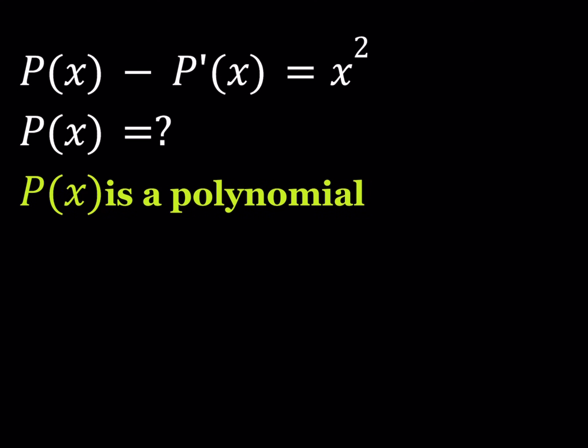So what does this mean? First of all, let's talk about this expression. That means the derivative of P(x), in other words, the rate of change. Now, we are subtracting the polynomial - we are subtracting from a polynomial the derivative of that polynomial and we're getting x squared. Is that possible? Let's see what happens.